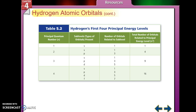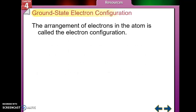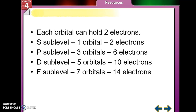When we think about the electron cloud, each orbital will hold two electrons. So the S sub-level can hold two electrons, the P sub-level can hold six electrons, the D sub-level can hold ten electrons, and the F sub-level can hold fourteen electrons. This information is really important to remember.